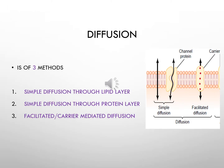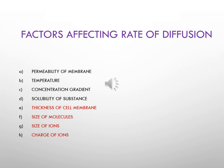Thus diffusion is of three methods: simple diffusion through lipid layer, simple diffusion through protein layer, and facilitated or carrier-mediated diffusion. Now let's see the factors affecting the rate of diffusion. First is permeability of the cell membrane — when permeability increases, the rate of diffusion increases. Next is body temperature — when temperature increases, the thermal motion of molecules increases and thus diffusion rate also increases. Next is the concentration gradient or electrical gradient of substances across the cell membrane — when concentration gradient increases, diffusion rate increases.